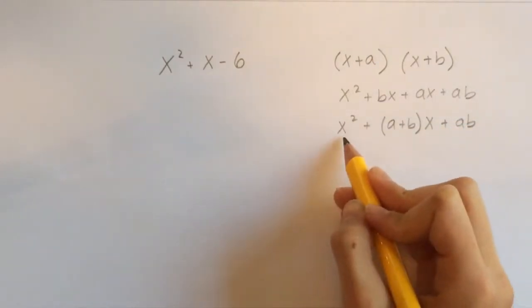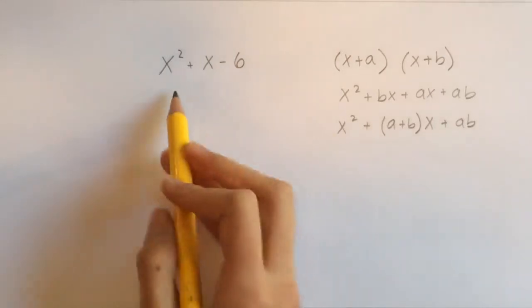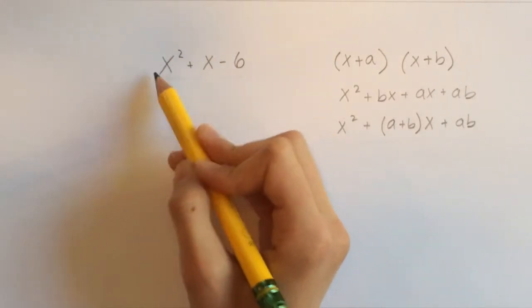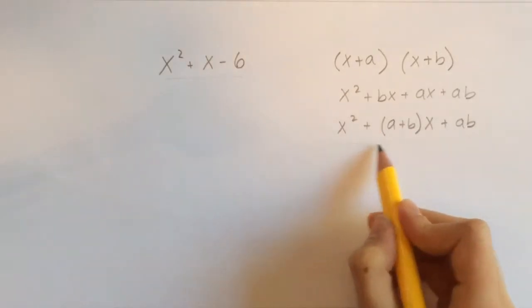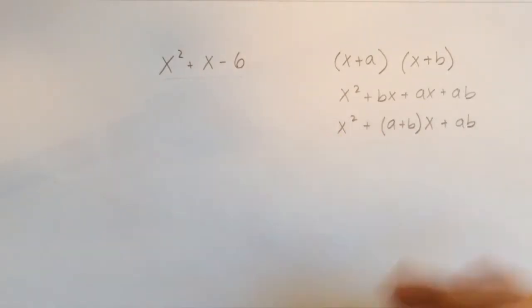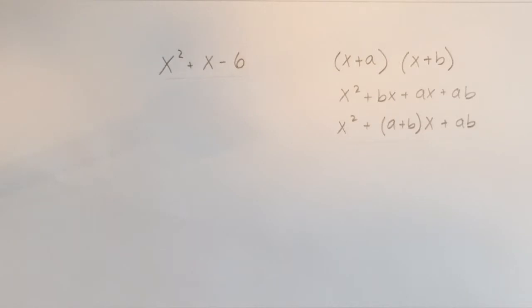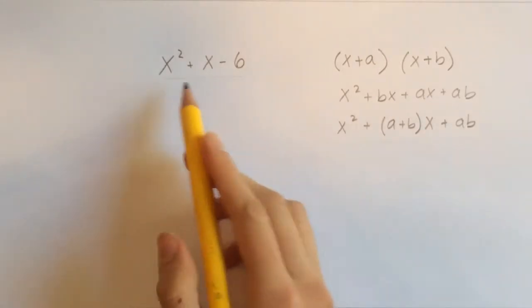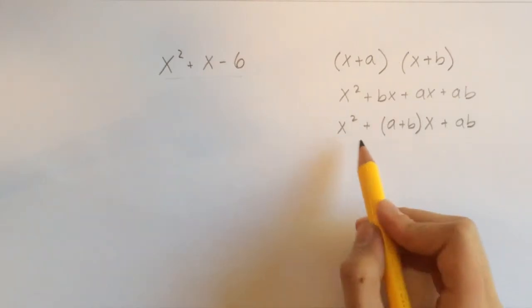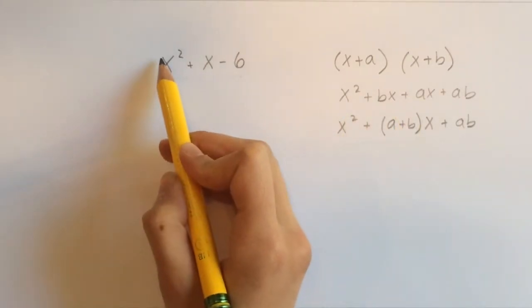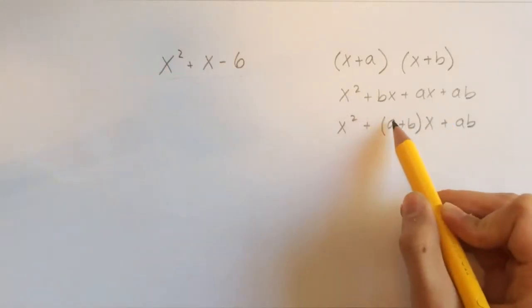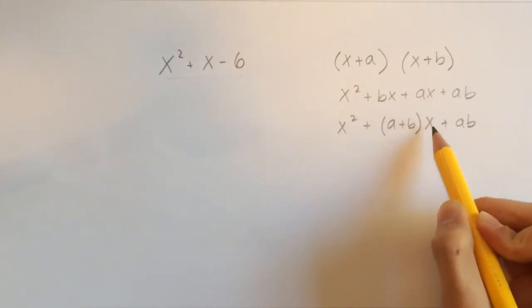Okay, so now that we have found this right here, we can see that this polynomial, x squared plus x minus 6, closely resembles x squared plus a plus b times x plus ab. So let's compare the different parts of these two things. So here we have an x squared, we have an x squared right here. Here we have an a plus b times x.